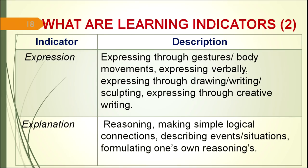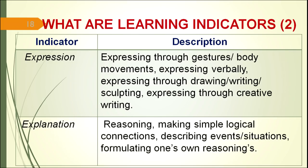The fourth important indicator is explanation. If children describe things in their own language, that is an explanation. The explanation indicator can be judged by giving reasoning activities in the classroom — making simple logical connections between cause and effect. For example, fruit and vegetables spoil much faster in summer than in winter. Children can explain the cause of that. Describing events, situations, and formulating their own reasoning and point of view also counts as explanation.